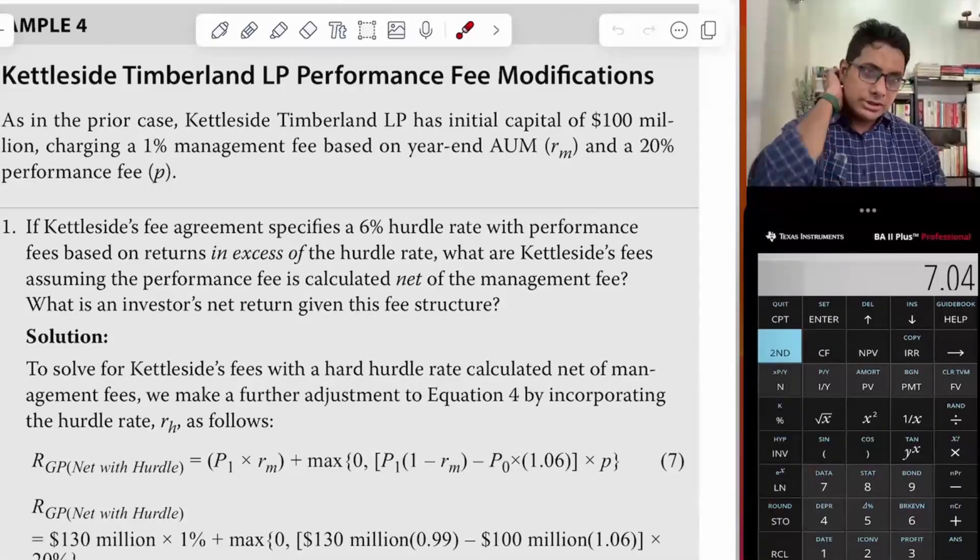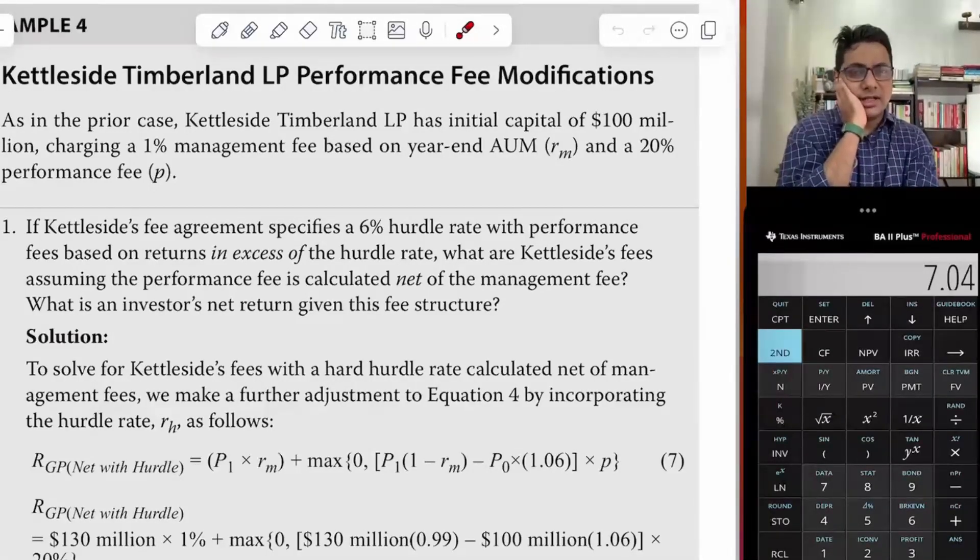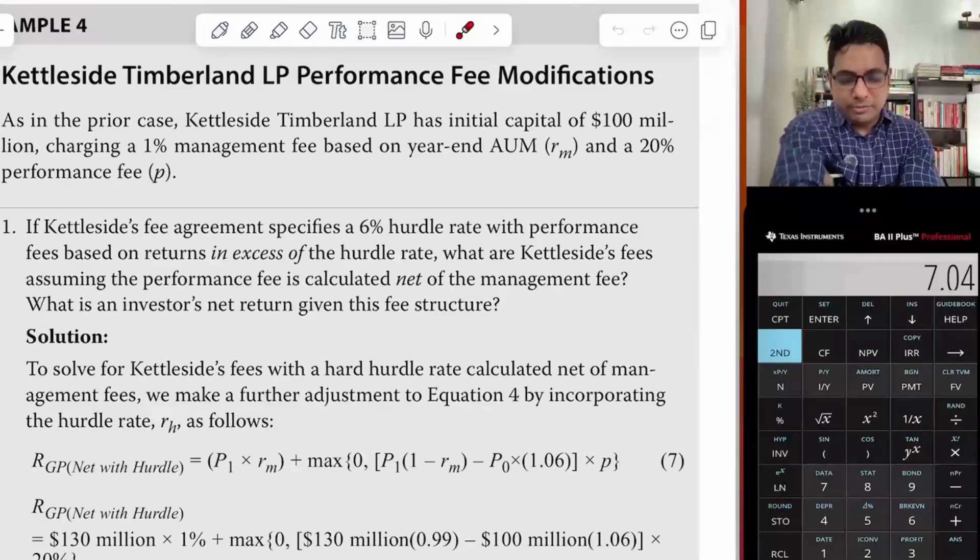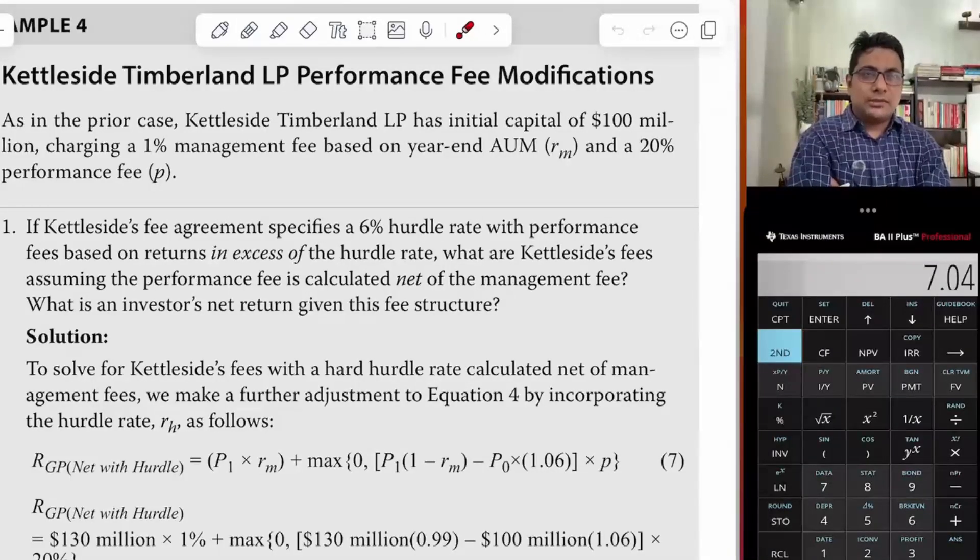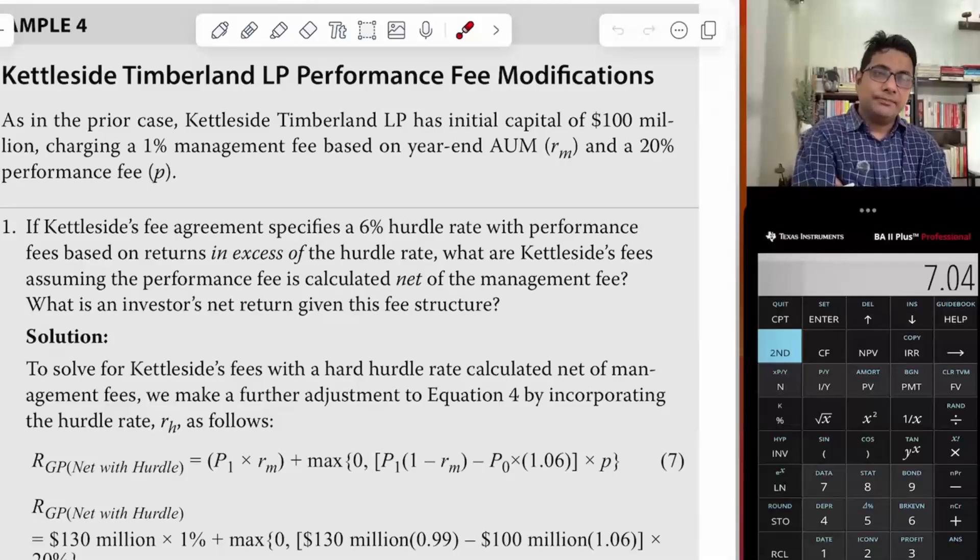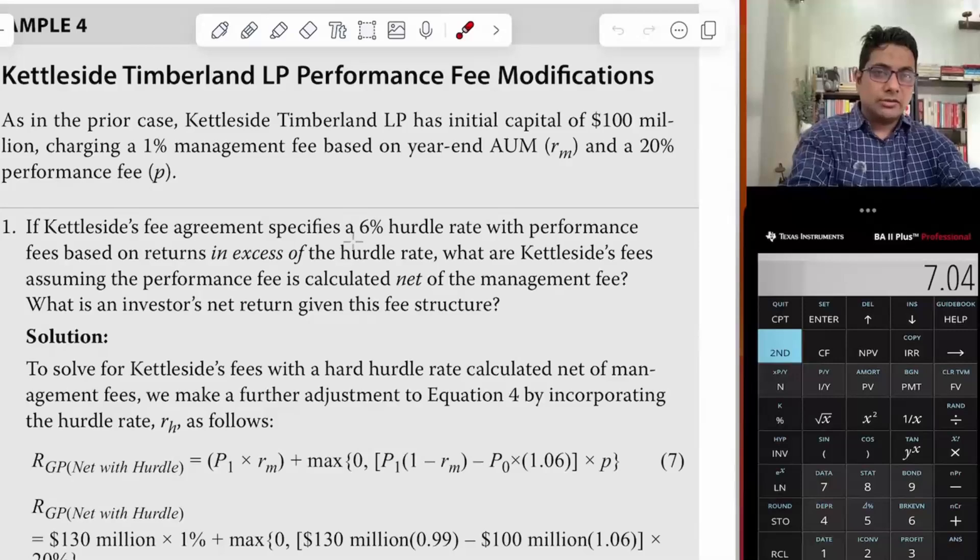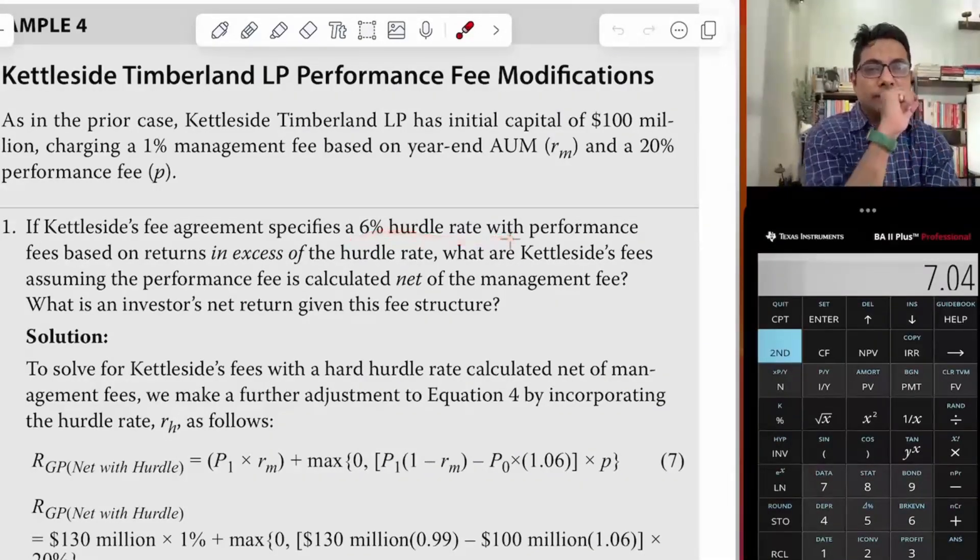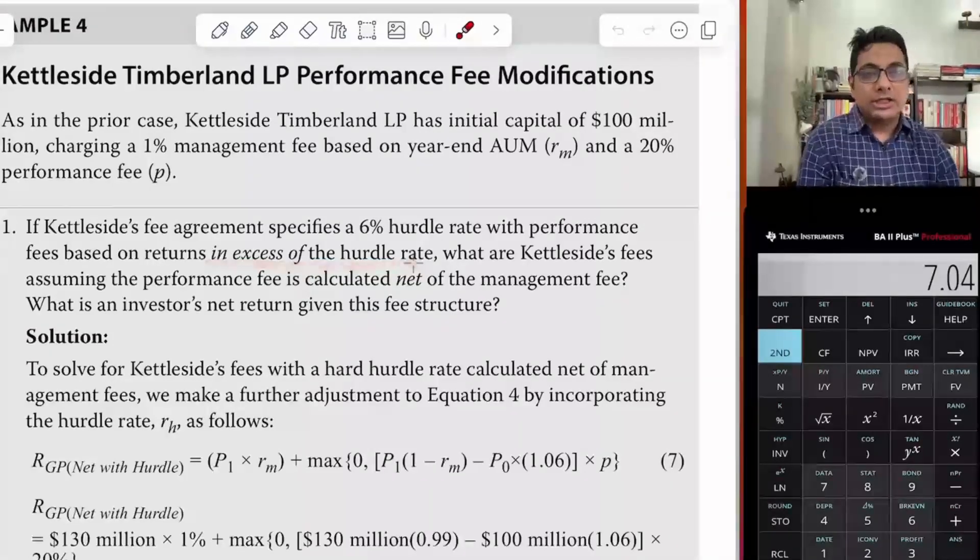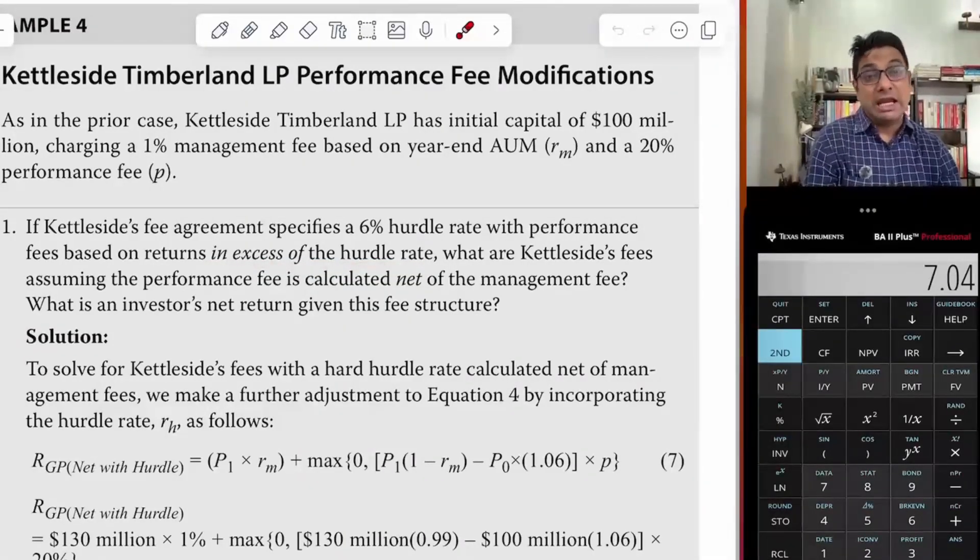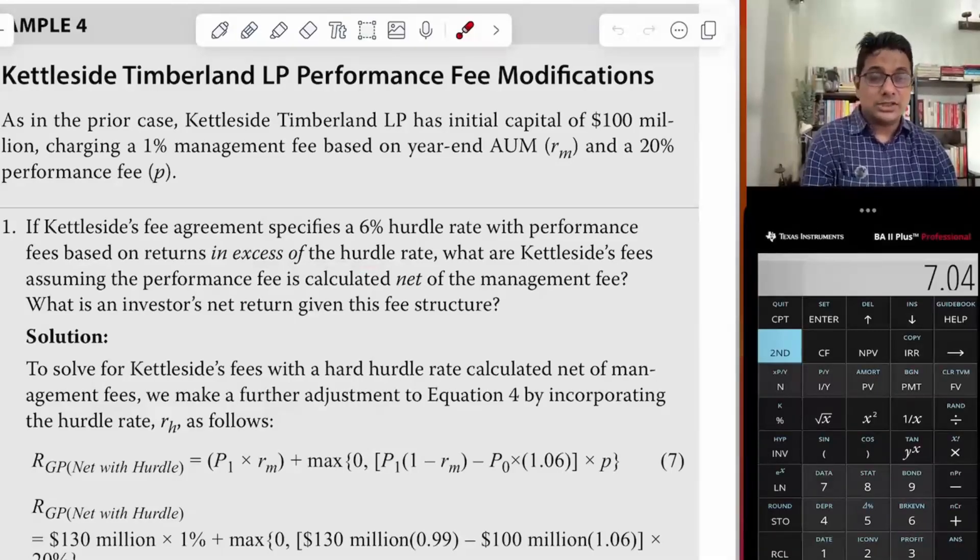As in the prior case, Kettleside Timberland LP has initial capital of $100 million, charging a 1% management fee based on year-end AUM and 20% performance fee. Question number one: if there is a hurdle rate of 6%, with performance fee based on return in excess of the hurdle rate, what are the Kettleside fees assuming performance fees are calculated net of management fee, and what is the investor's net return given this fee structure?